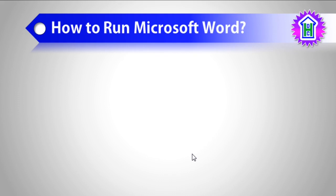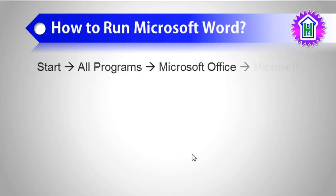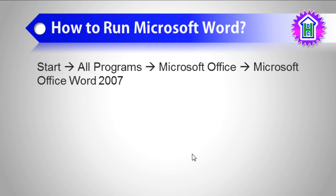Now let us see how we can run Microsoft Word. To run Microsoft Word, we have to click on the Start button, click on All Programs, point to Microsoft Office, and then choose Microsoft Office Word 2007.